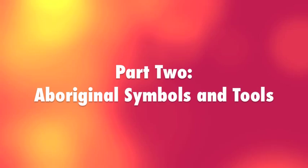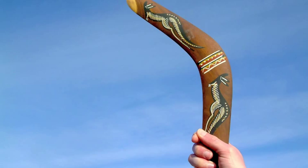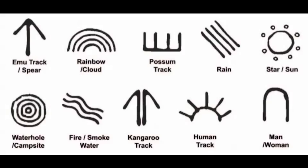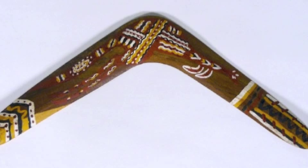Australian Aborigines have been using boomerangs for hundreds of years for hunting. The unique curve in the boomerang allows it to be thrown and eventually circle back to the thrower. Boomerangs often have symbols and stories painted on them. The symbols that Aboriginals use should be introduced to students so they can create their own narrative. The symbols include things like rainbows, the sun, men and women, and campsites.